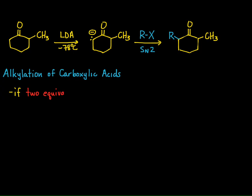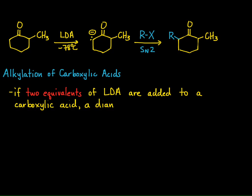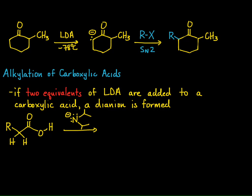The difference here is that we have to add two equivalents of LDA to the carboxylic acid, and in that process a dianion is formed. In the first step, since we have a carboxylic acid treated with a strong base, the first step is going to be deprotonation of the carboxylic acid, and we form our carboxylate.